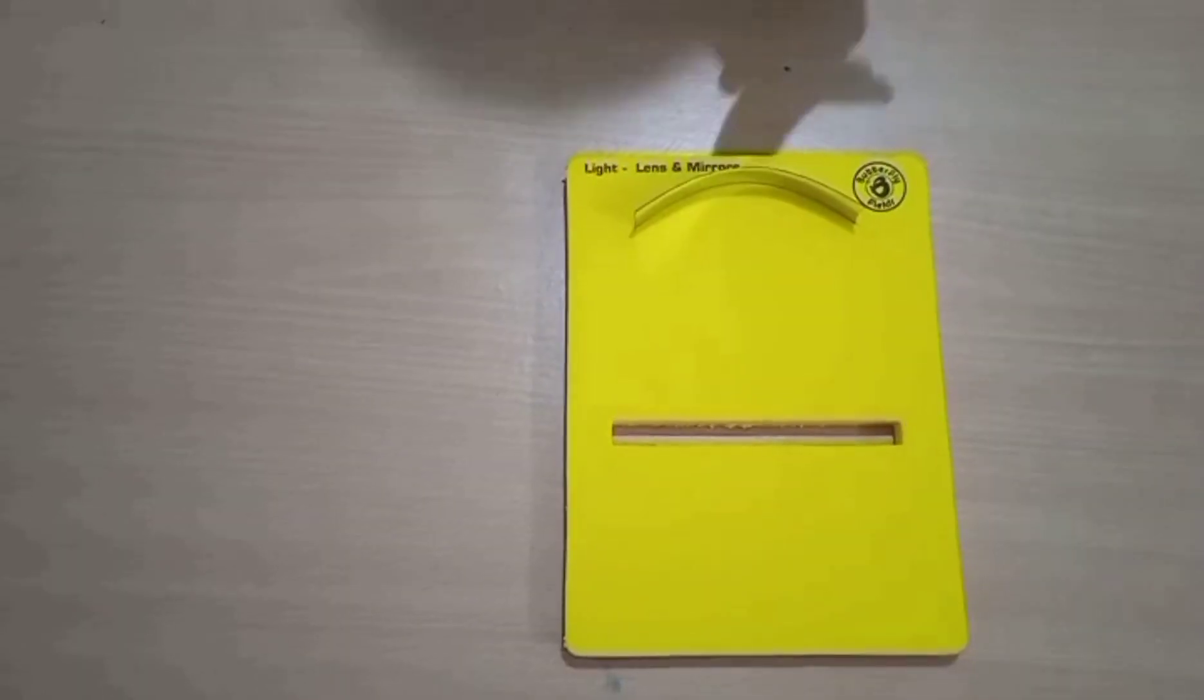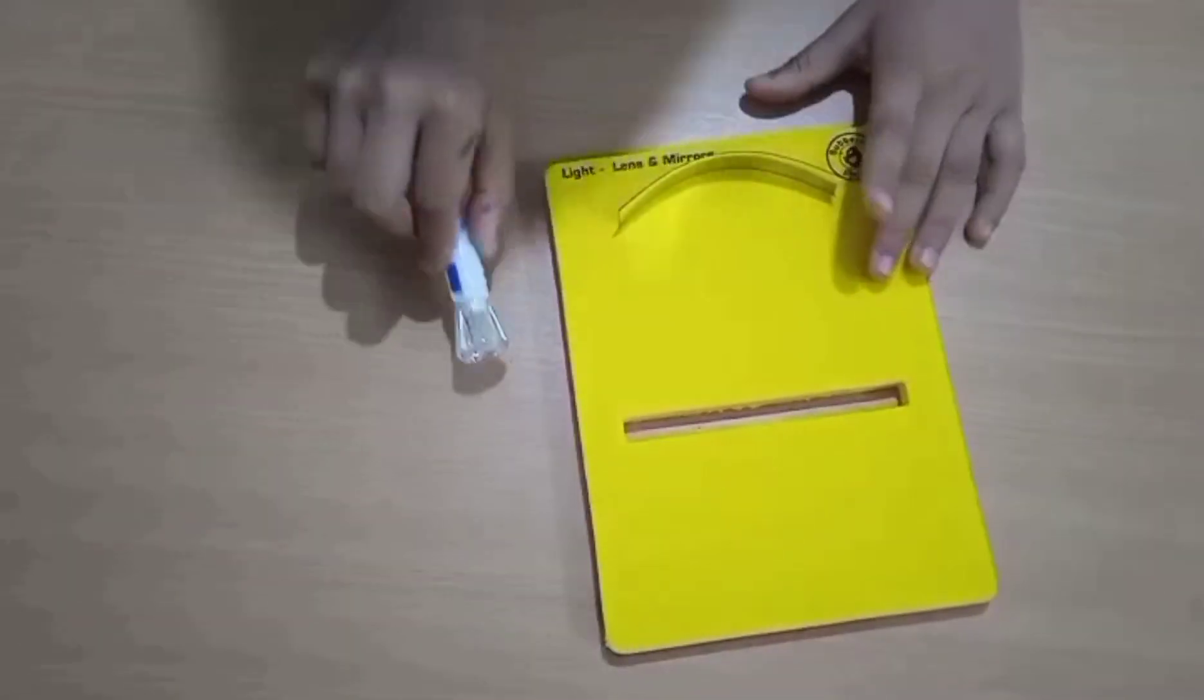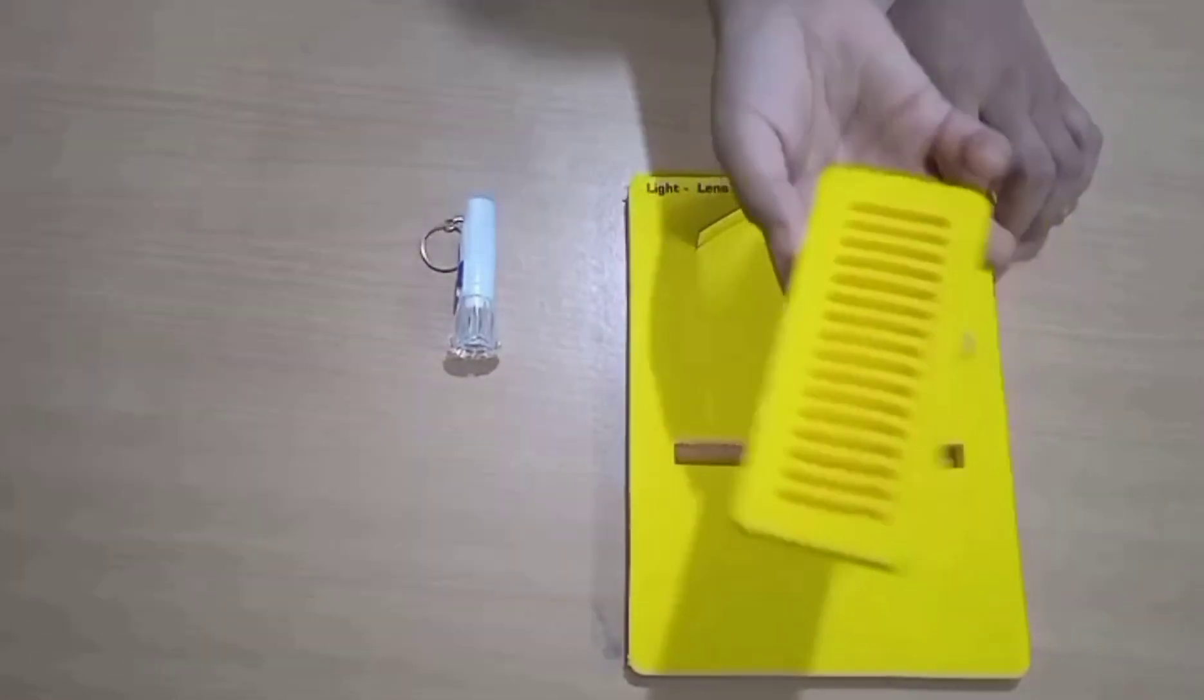My name is Sutranj and today we will do a science practical. For this practical we need a pad like this, a mirror, a torch, and a grid like this.